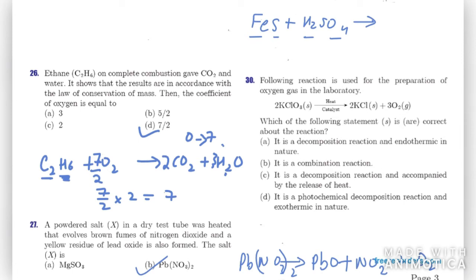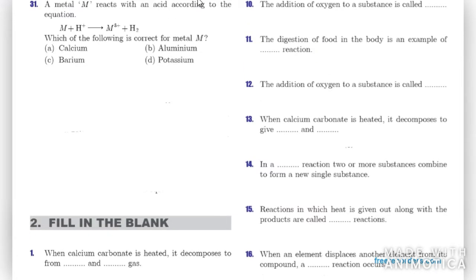Question thirty: the reaction KClO3 → KCl + O2 is used for the preparation of oxygen. We need to identify the type and nature of the reaction. It is a decomposition reaction. Additionally, since heat is absorbed in this process, it is an endothermic decomposition reaction.